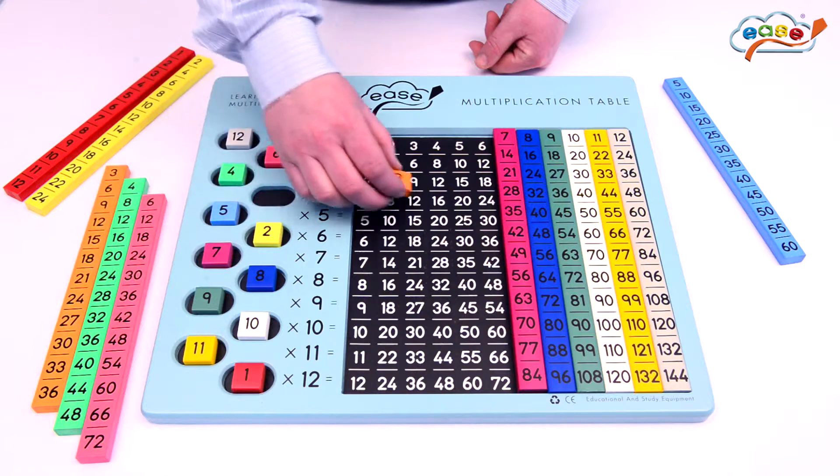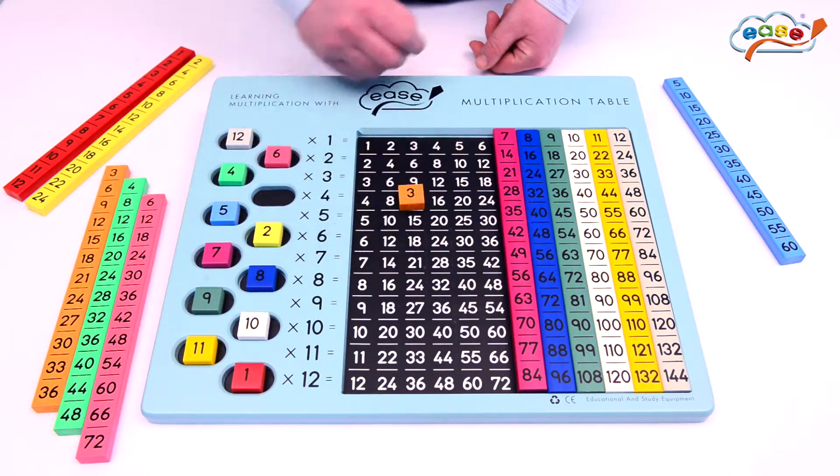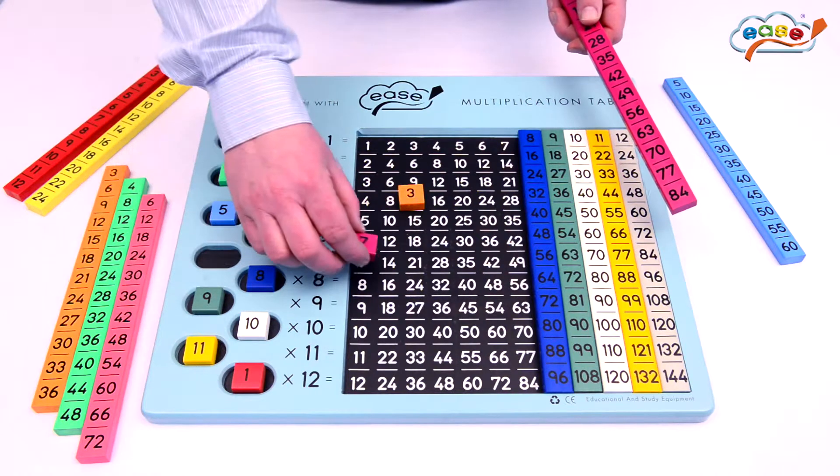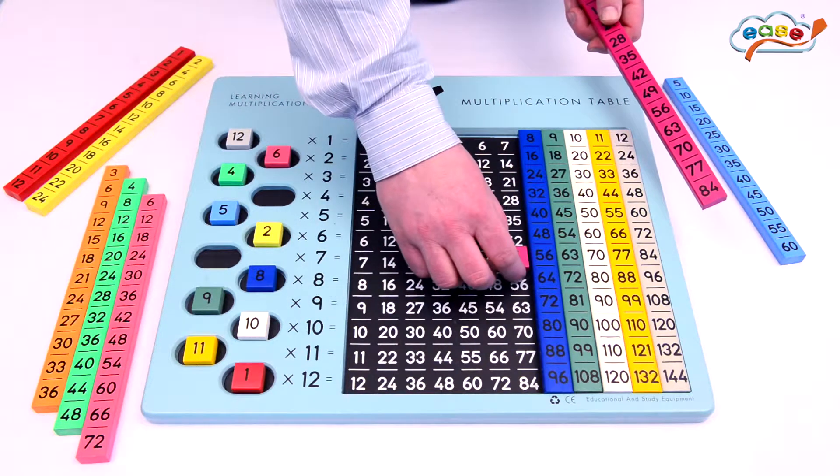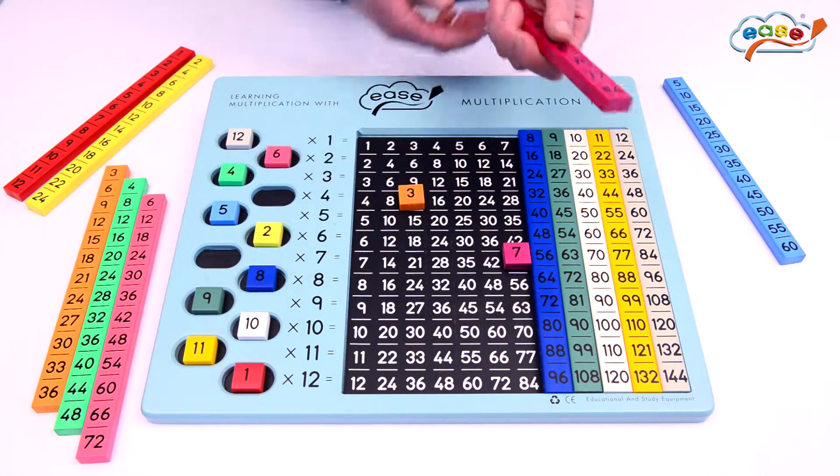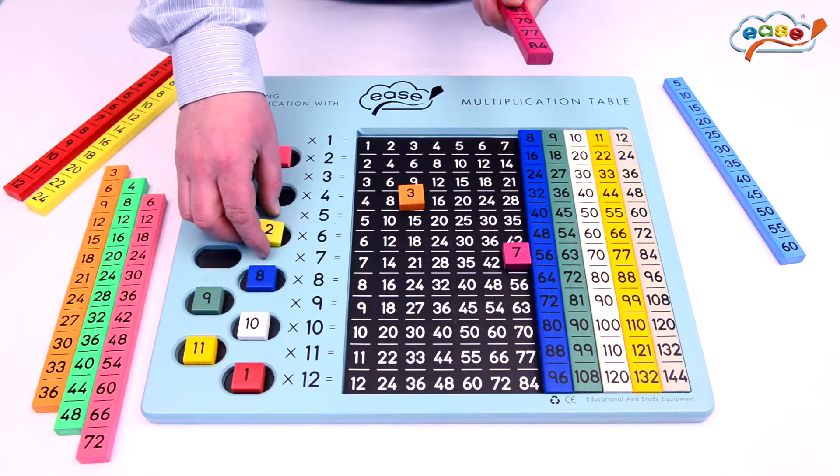So we have 3 4's are 1, 2, 3, 12. And the same way, for example, we have 7 7's are 1, 2, 3, 4, 5, 6, 7, 7's are 49. But the fact that there is no color, hopefully the child would have understood the initial concept of basic multiplication.